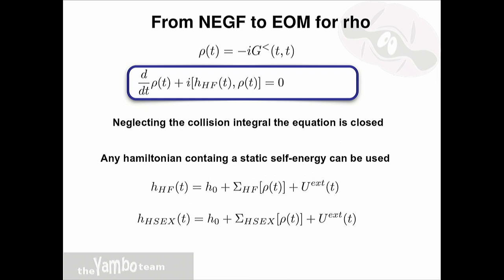In detail, the Hartree-Fock Hamiltonian contains the bare electronic Hamiltonian plus the Hartree-Fock self-energy, which is a functional of the density matrix. Since we are in real time, there is also the external potential. I used Hartree-Fock up to now because it is how the description of the Kadanoff-Baym equations is found in textbooks, but if you want to run simulations on a real system it is much better to use the HSEX approximation, which is basically the same as Hartree-Fock except the exchange (Fock) term is statically screened.